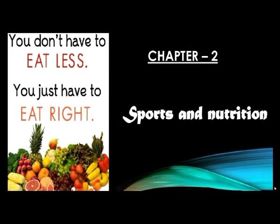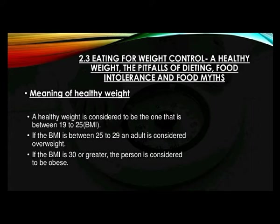Welcome back to our second unit: Sports and Nutrition. We have completed two parts — the first part covered balanced diet and nutrition, elaborating macro and micronutrients; the second part covered the nutritive and non-nutritive components of the diet. Now in the third part we are going to study in detail about eating for weight control, including healthy weight, the pitfalls of dieting, food intolerance, and food myths. According to the National Institute of Health, a healthy weight is considered to be one with a BMI between 19 and 25.